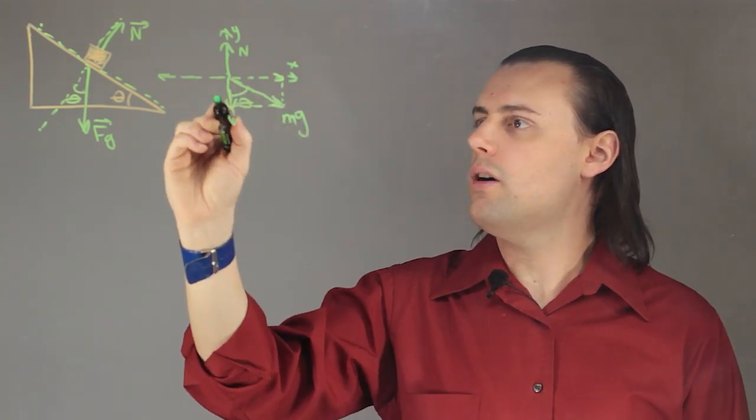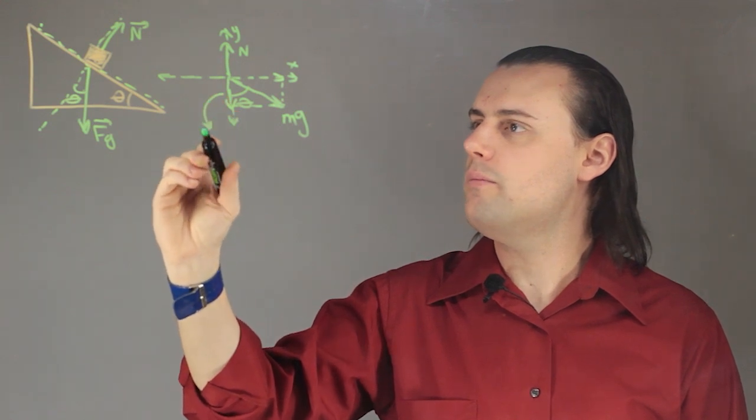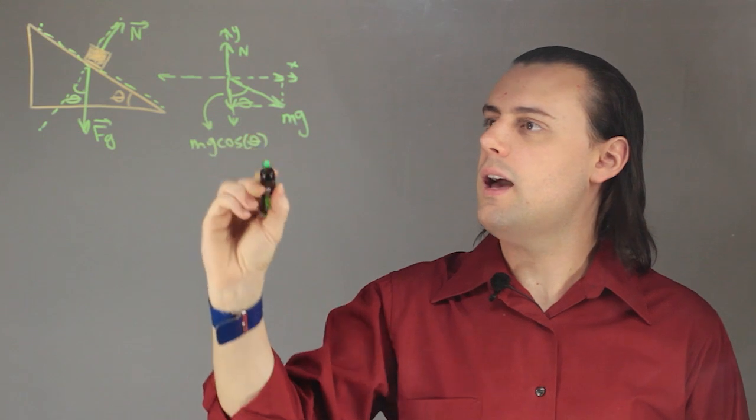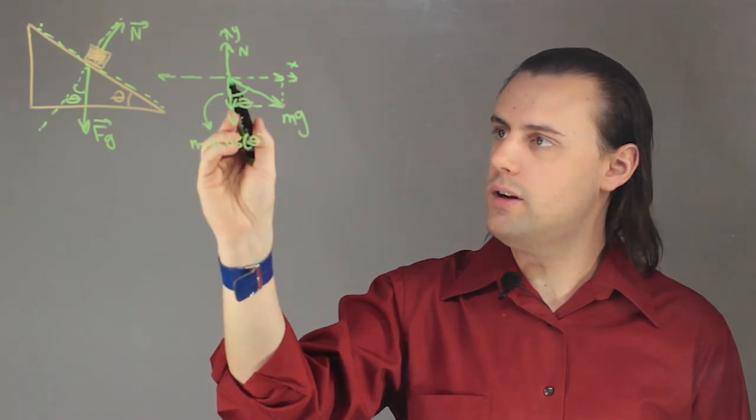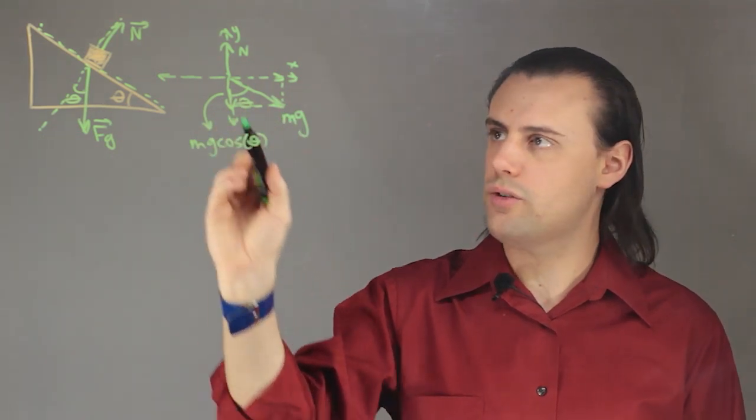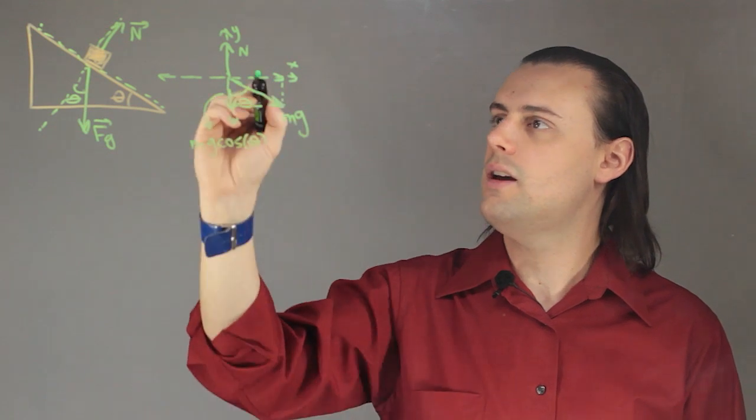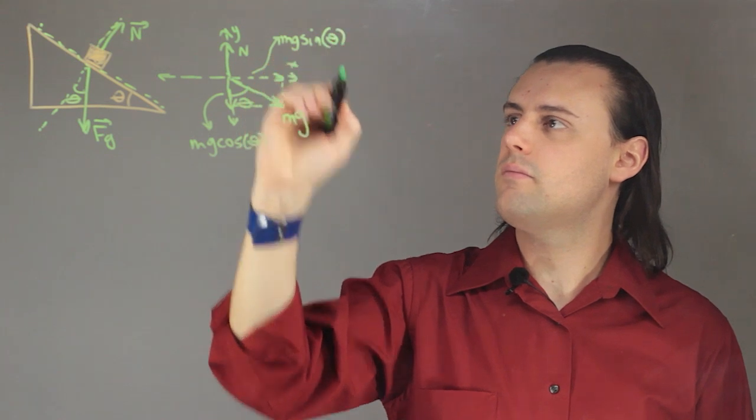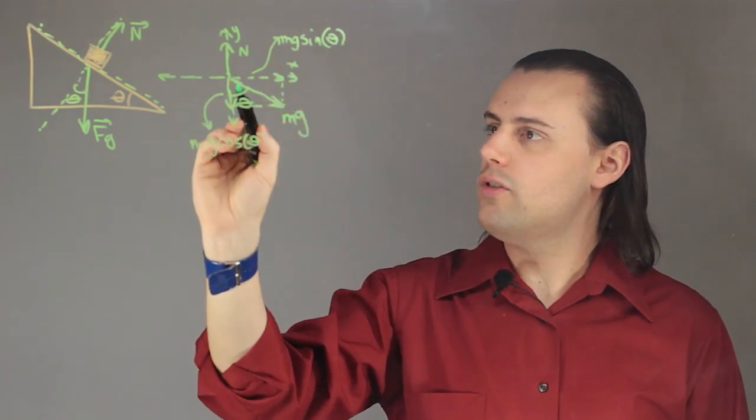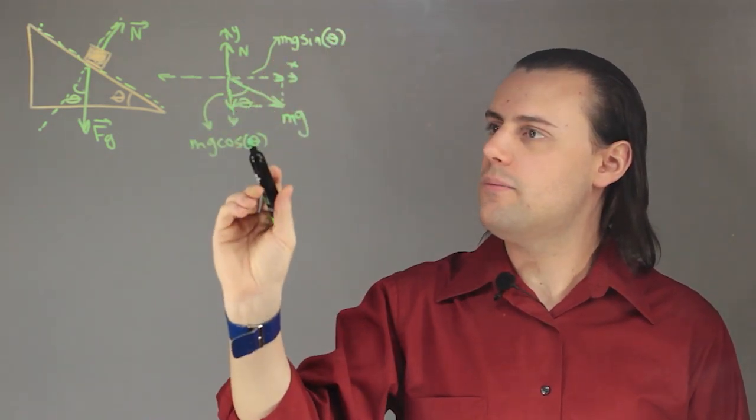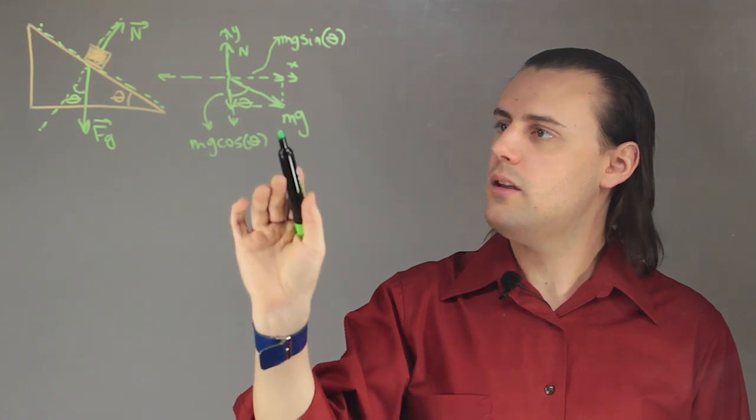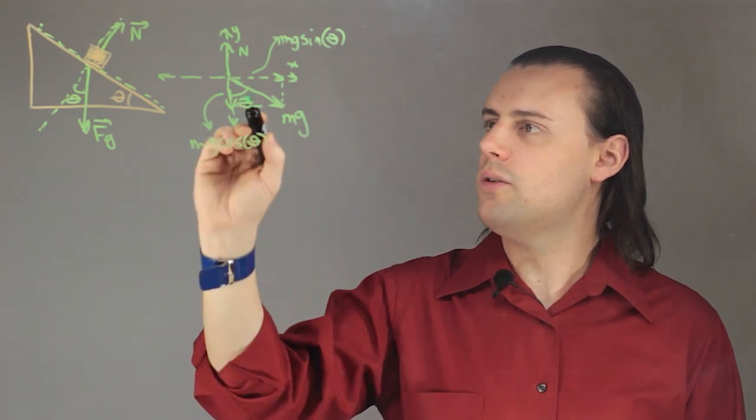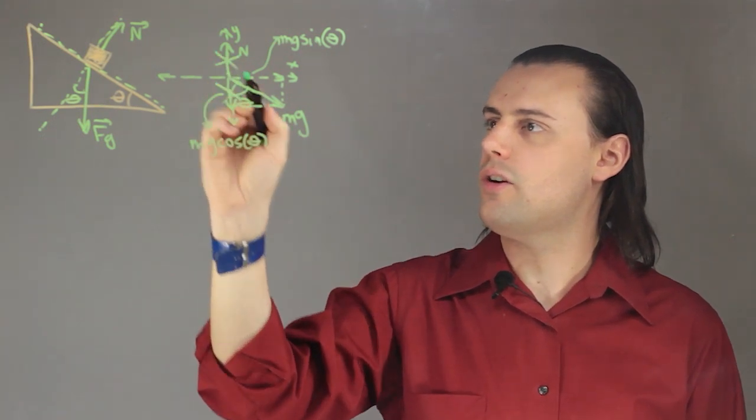So the y-component is going to be equal to mg cosine theta and the component of the gravitational force vector along the x-axis is going to be mg sine theta and the normal force is actually equivalent in magnitude to the vertical component of this gravity force. So these vectors will cancel each other out.